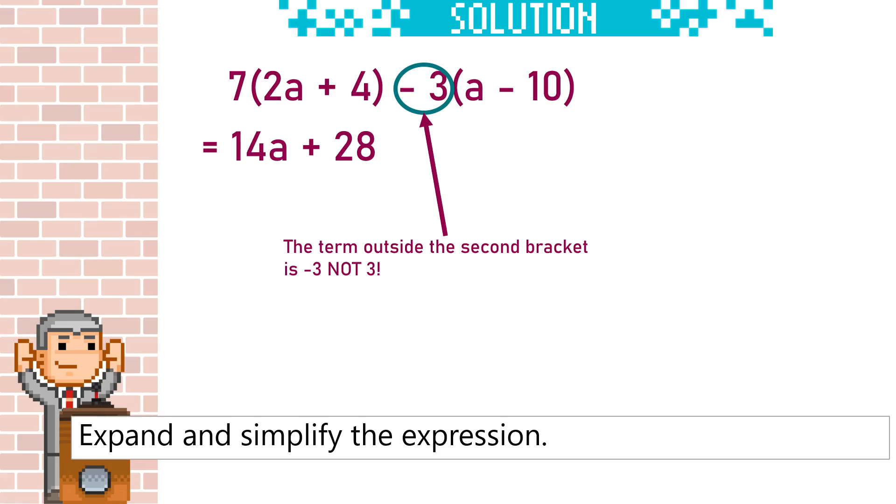So our question is, what is minus 3 times a? That would be minus 3a. Next question, what is minus 3 times minus 10? Two minuses make a plus, that would be plus 30. Then we can collect the like terms, 14a take away 3a is 11a, 28 plus 30 is 58.